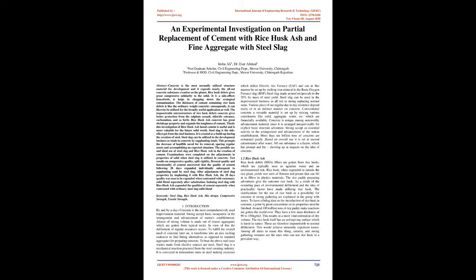Rice husk ash gives great compressive strength to concrete. It is a by-product and hence helps in reducing ecological contamination. The density of cement containing rice husk ash is similar to normal weight concrete, and can be used for general purpose applications. The impenetrable microstructure of rice husk ash concrete gives better resistance to sulfate attack, chloride penetration, carbonation, etc. Rice husk ash concrete has great shrinkage property and increases the toughness of cement.